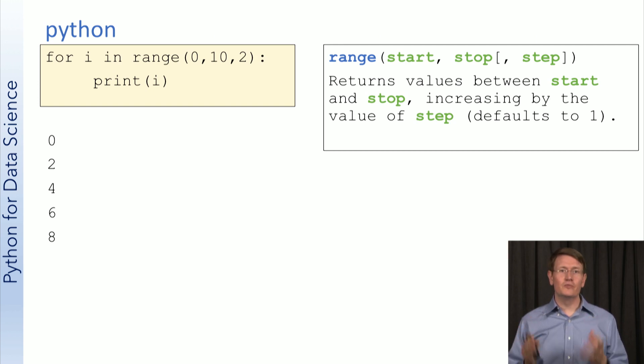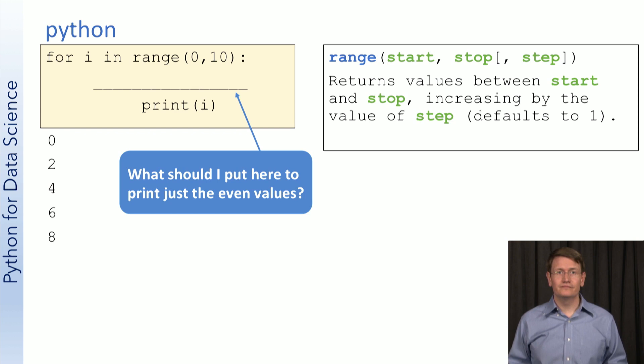Let's think back to this loop example, where we use the range function to help us print the even values between 0 and 9. Let's see how we could have done this using conditionals. What do you think I should put here to make it print just the even values? Take a moment and think about it.